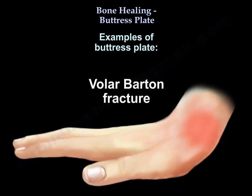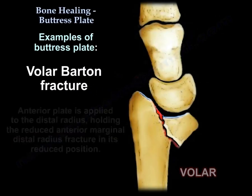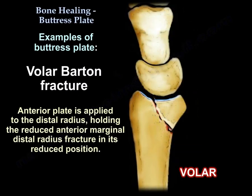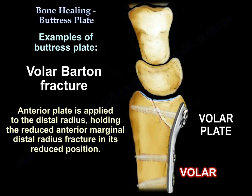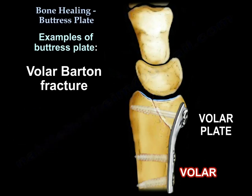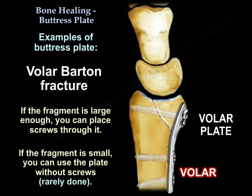Volar Barton fracture: an anterior plate is applied to the distal radius, holding the reduced anterior marginal distal radius fracture in its reduced position. If the fragment is large enough, you can put screws through it. If the fragment is not large, you can use the plate without screws, although that is practically rarely done.